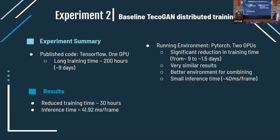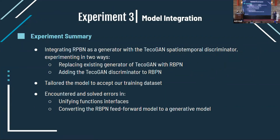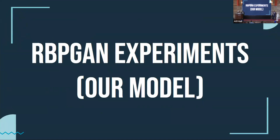We then trained TQGAN with a slight modification: training it on two GPUs instead of one, as the code published on GitHub utilized only one GPU. After this modification, we reduced the training time from nine days to around 1.5 days. We also produced a very small inference time relative to the other model — 40 milliseconds per frame. We then integrated the two models by removing the generator of TQGAN and converting the RBPN model from a feed-forward network to a generator network, integrating them together and modifying them to match our dataset.